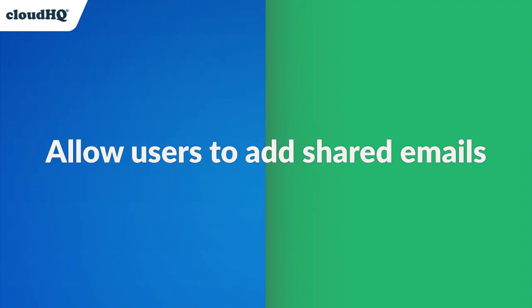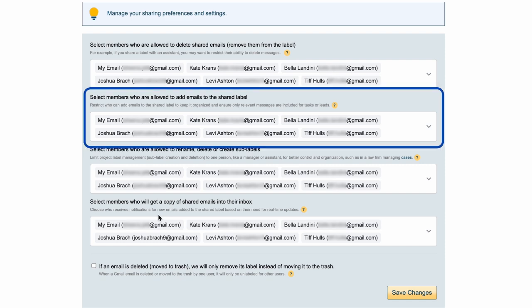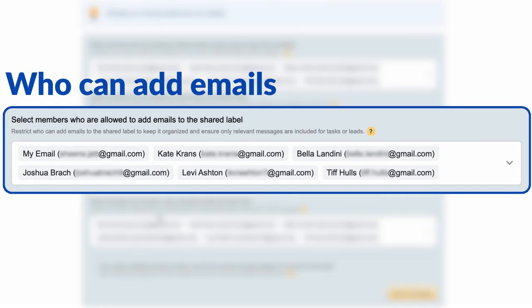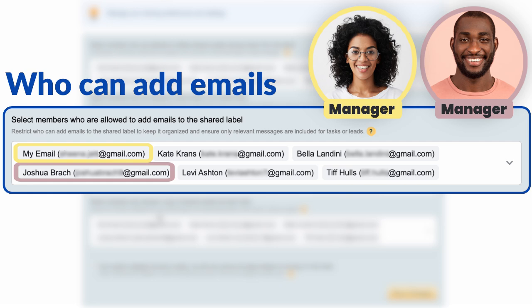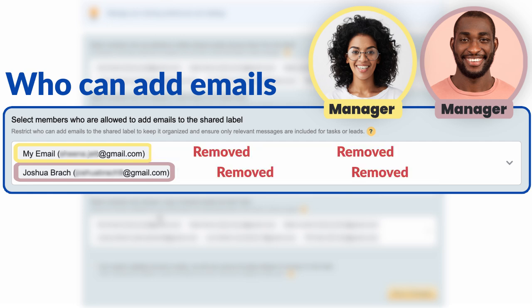Next, you have the power to designate which users can add emails to the shared labels. This means you can maintain organization and control your workflow effortlessly. For example, if you're managing high priority tasks or client communications, only trusted team members will be able to add relevant emails. No more rookie mistakes.